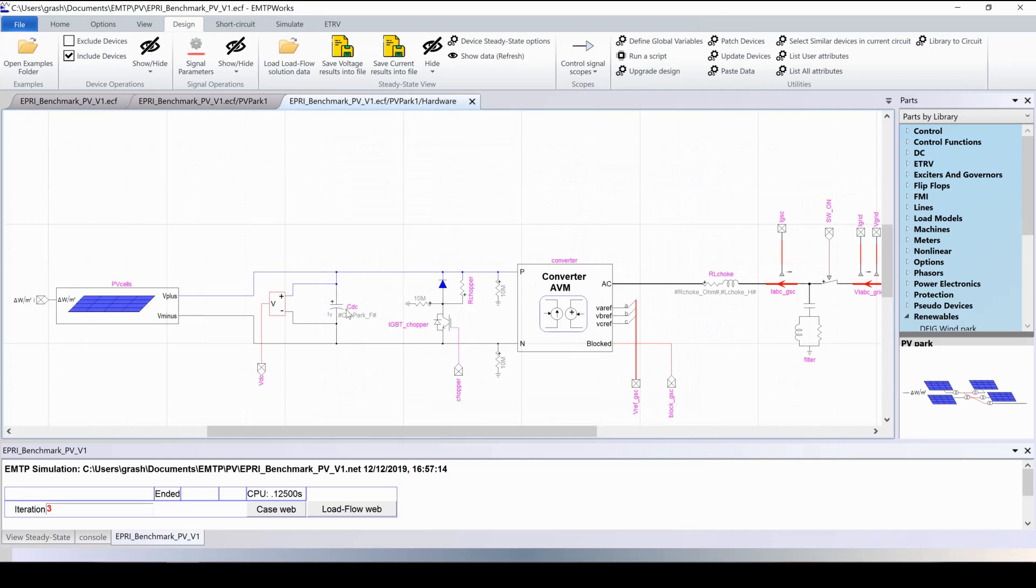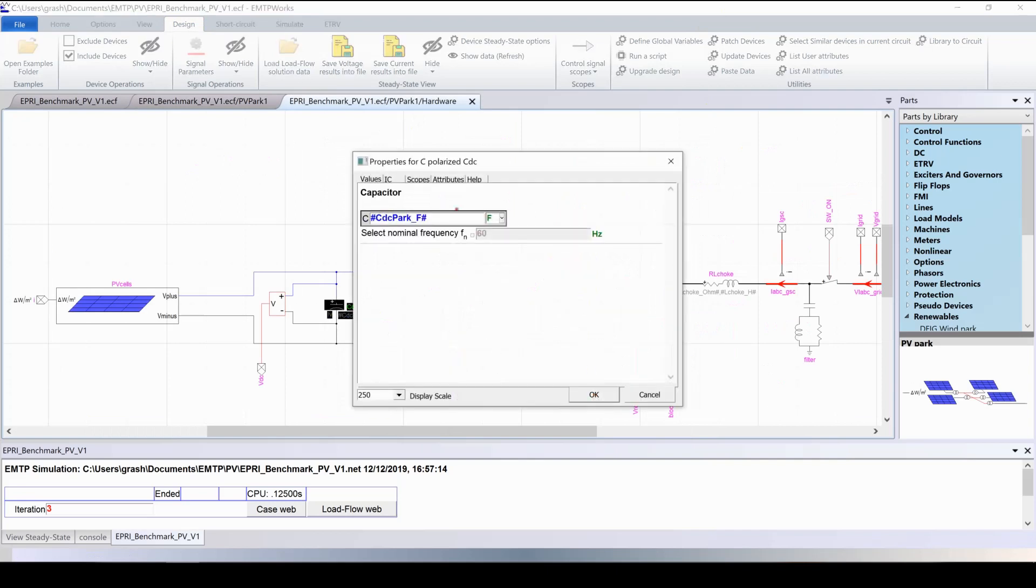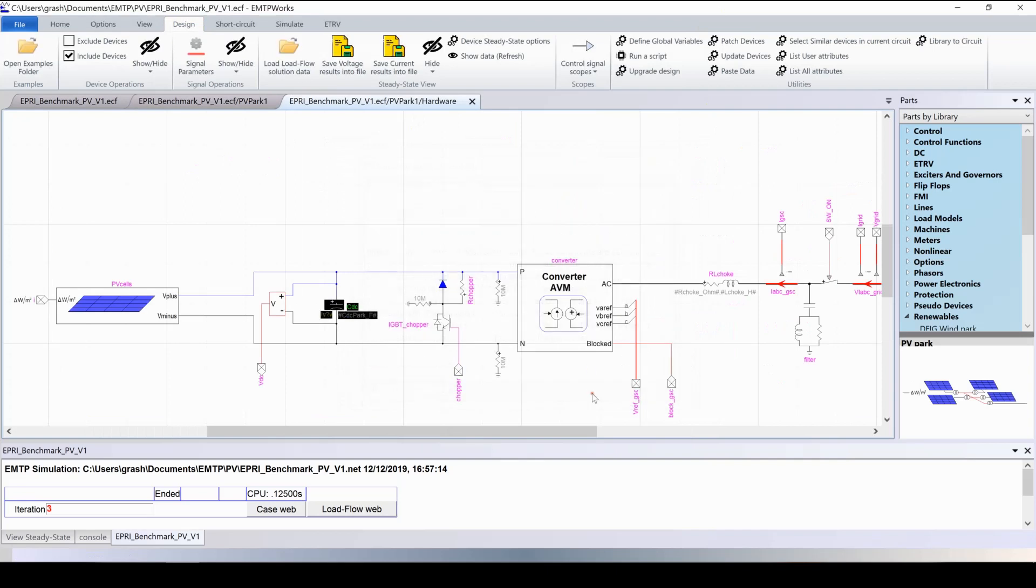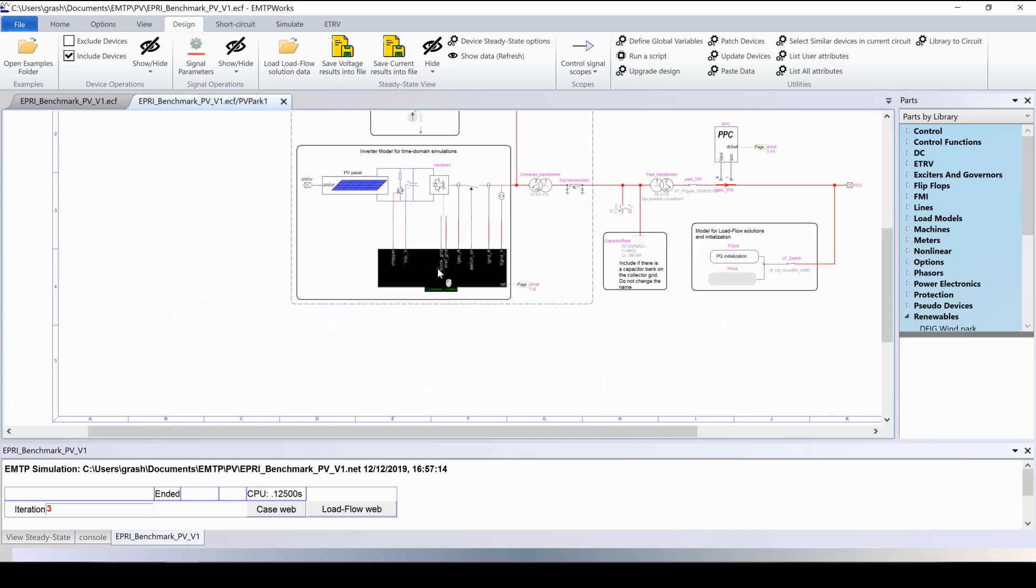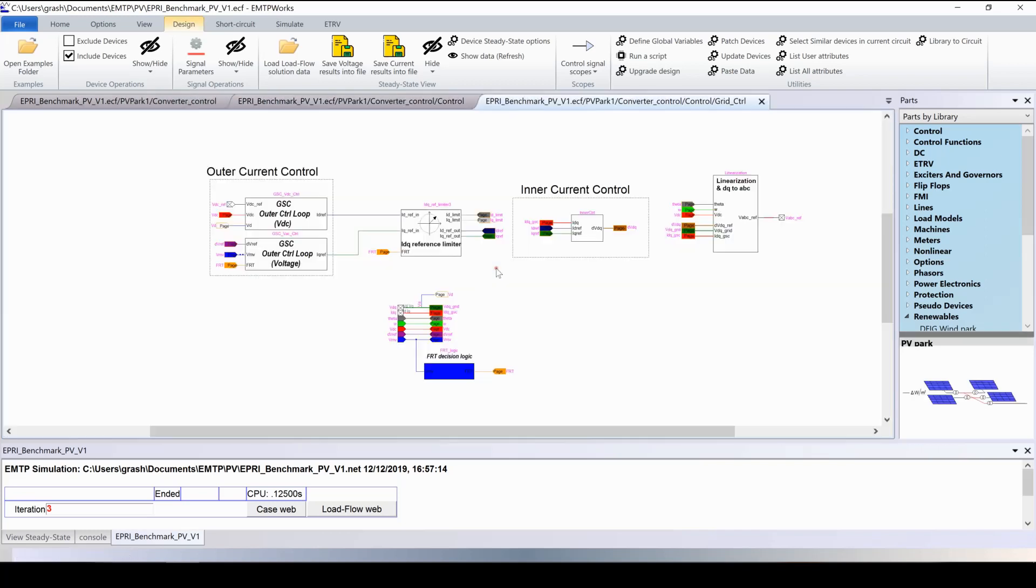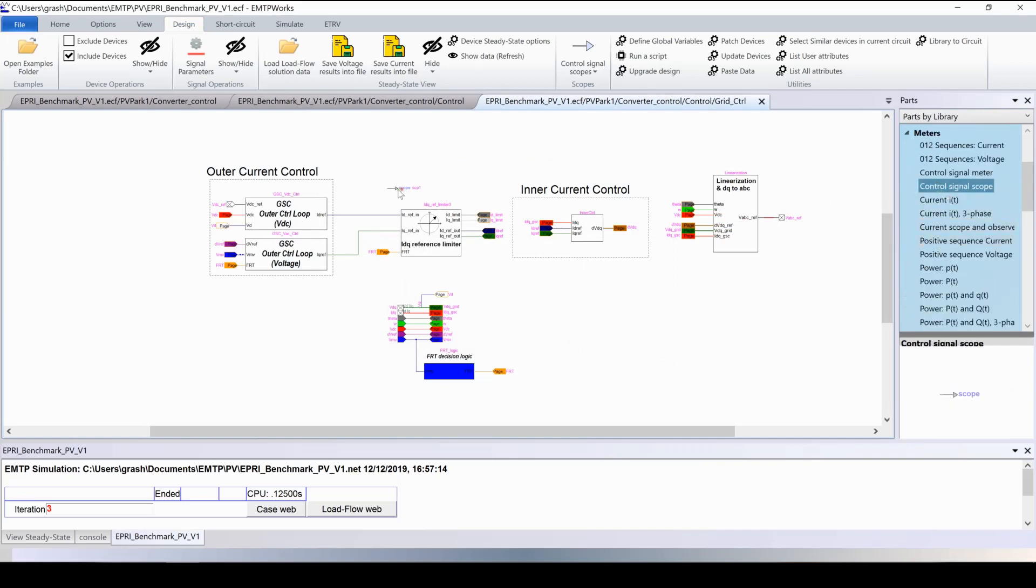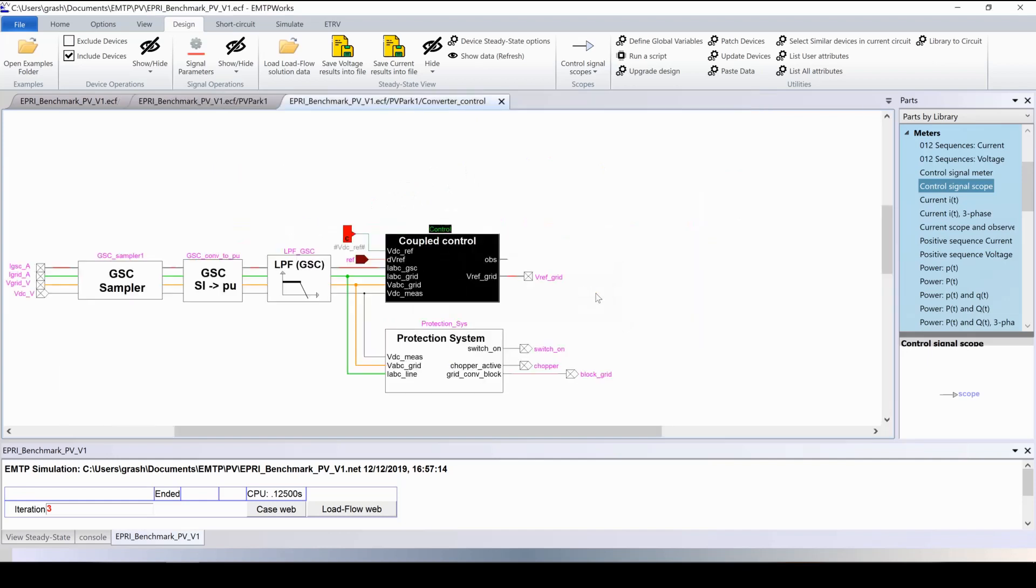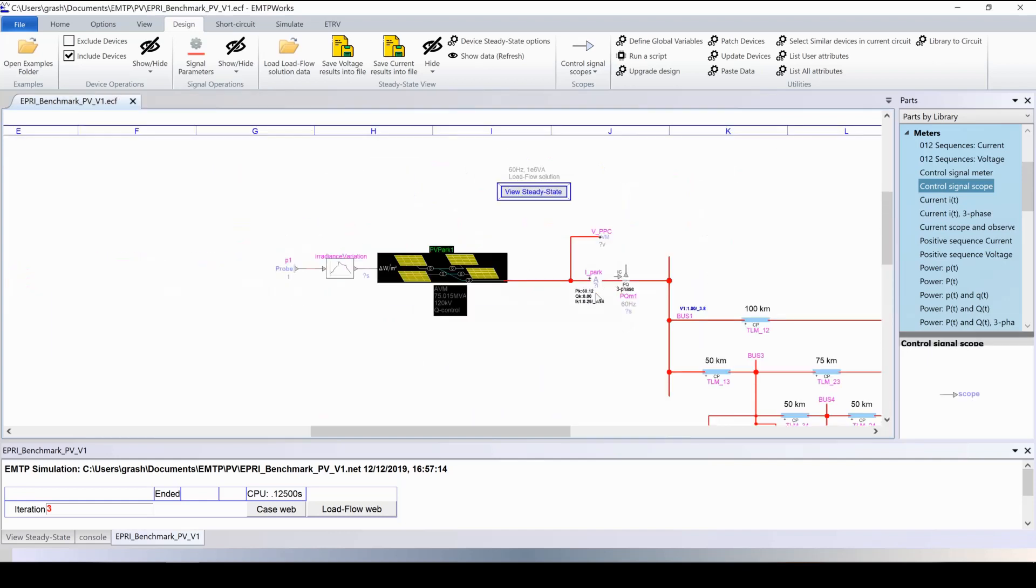Let's place some scopes inside the model in order to visualize several quantities. The first thing is we can visualize the DC voltage across the capacitance. Let's also go in the control block and visualize the d-axis reference. First we will unlock the circuit by trying to move a device and place a scope.